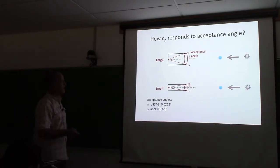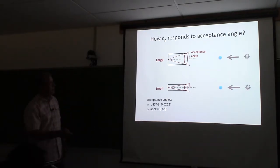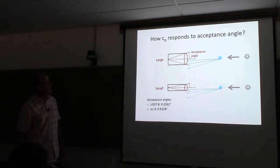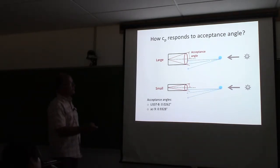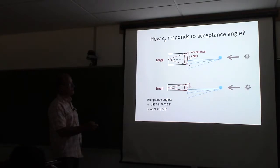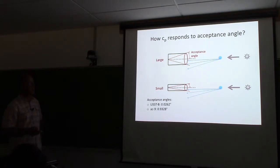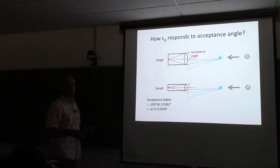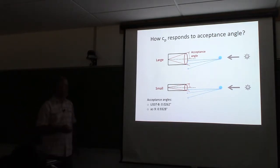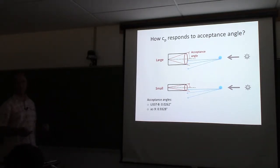Let's imagine we have transmitted light hitting a particle. We have a sensor with a large acceptance angle and a sensor with a small acceptance angle. With a large acceptance angle instrument, some of the scattered light will be interpreted as transmitted light - that's what the name 'acceptance' comes from. Light scattered at a larger angle won't be accepted as transmitted. With a small acceptance angle instrument, pretty much any scattering means the light won't be accepted as transmitted.